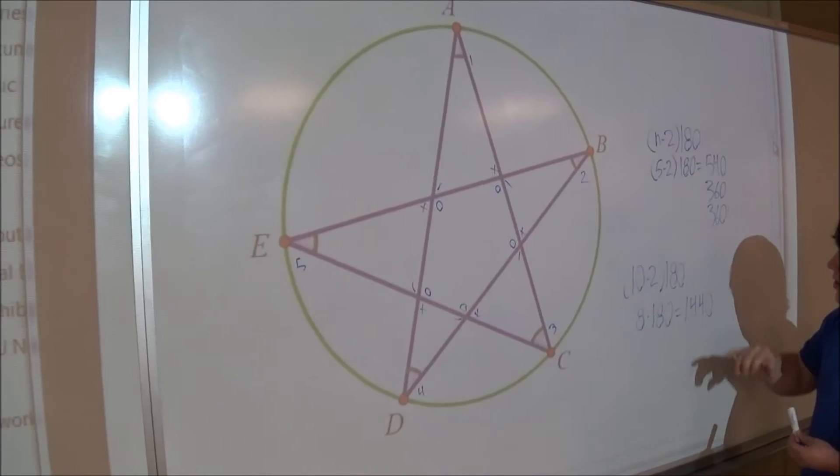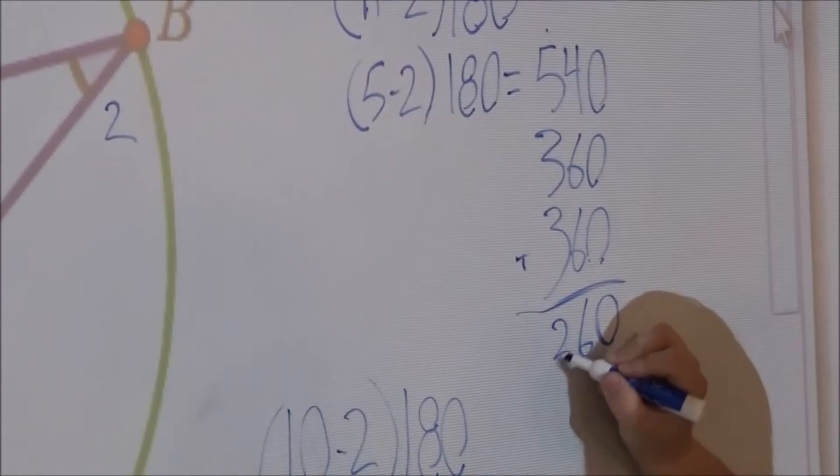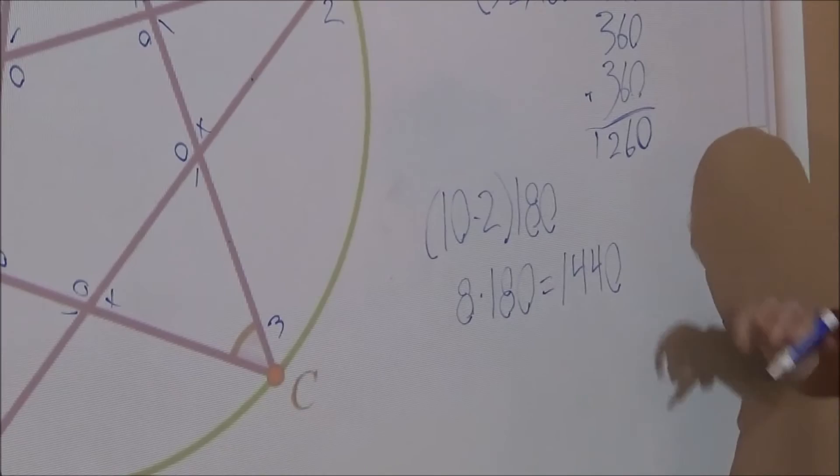Now I know what these are, so I'm going to add these up and subtract from the 1440. Adding these up, you get 1260. Subtract that from that and you get 180. So all angles added together equal 180.